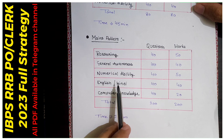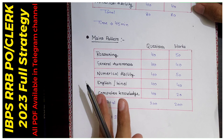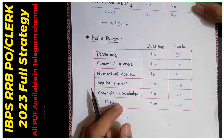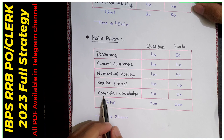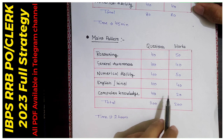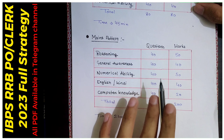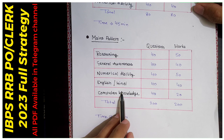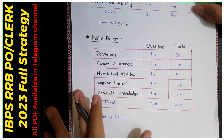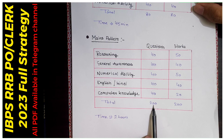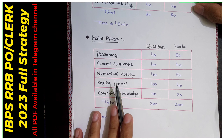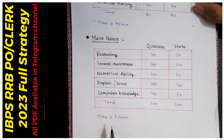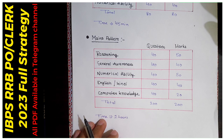Then we have English and Hindi — you get two options, you can choose either Hindi or English. There are 40 questions and 40 marks. The last subject is computer. In total you will get 200 questions and 200 marks. The time given is a composite 2 hours. You should make a mock test beforehand so you know how much time to allocate to each section.